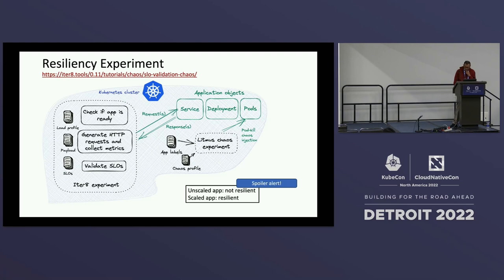Spoiler alert: we are going to use two different configurations. First, an unscaled version of the app with just one pod. Then we'll scale up the application to two or three pods and retry the experiment. The unscaled app is not going to be resilient because of the pod failures, and the scaled app will be resilient because it has more replicas. This is just a demo scenario, but the idea is to demonstrate concurrent experimentation using Litmus and Iterate simultaneously.